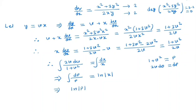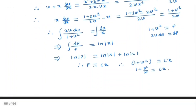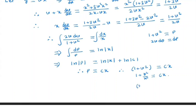So we get ln(p) equal to ln|x| plus a constant. Since we have ln on both sides, we take the constant as ln(c), giving p equal to cx. Substituting back p equals 1 plus v squared, and v equals y/x, we get 1 plus y squared by x squared equal to cx. Multiplying through by x squared gives the general solution: x squared plus y squared equal to cx cubed.